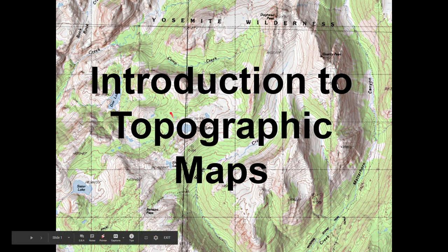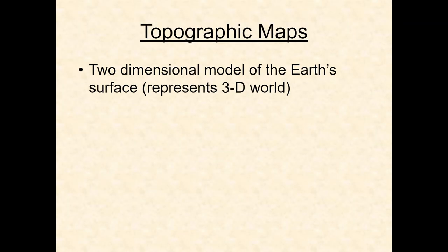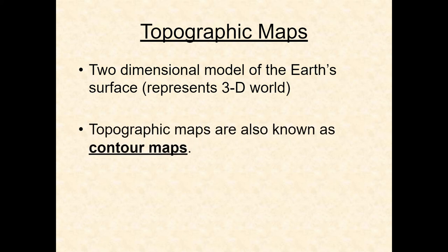Let's talk about topographic maps — topo maps for short, also called contour maps. If you haven't seen them before, they're a way to represent 3D features on a map. Looking at a topographic map, you can see mountains, valleys, ridges, flatter places, and steeper places. It's a two-dimensional model of the earth's surface to represent a 3D world.